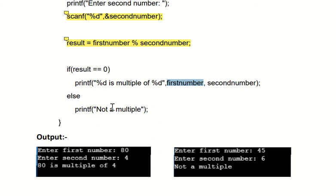So in that case value of result will be 3 and because of that this if condition becomes false and it will jump to else part, and in else part we have printf not a multiple, so here it will print not a multiple.